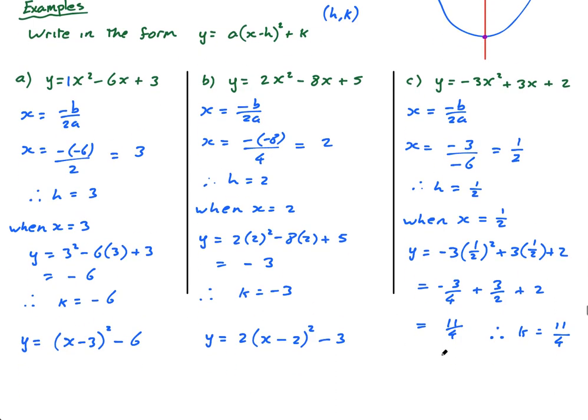And finally, y equals a is negative 3, so it's negative 3 into x minus h, which is x minus 1 half squared, plus k, 11 over 4.